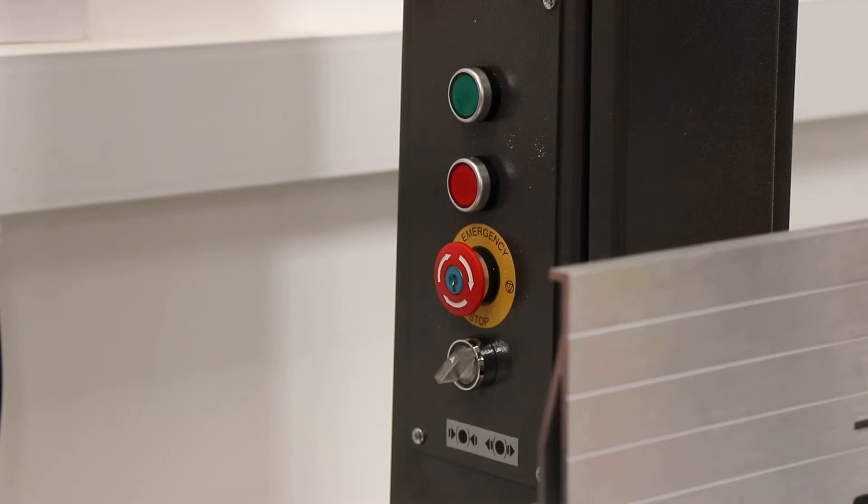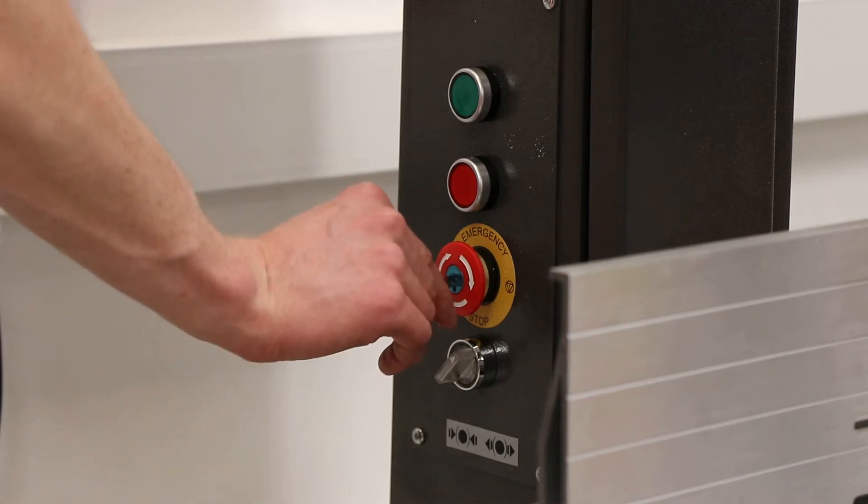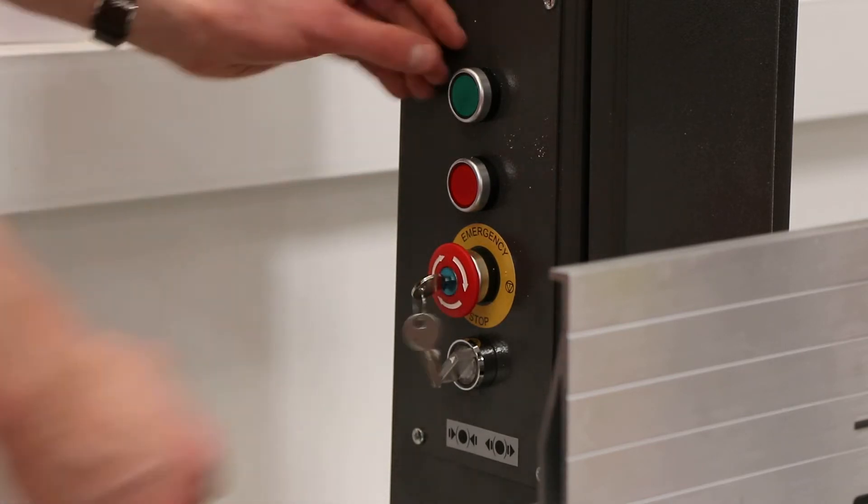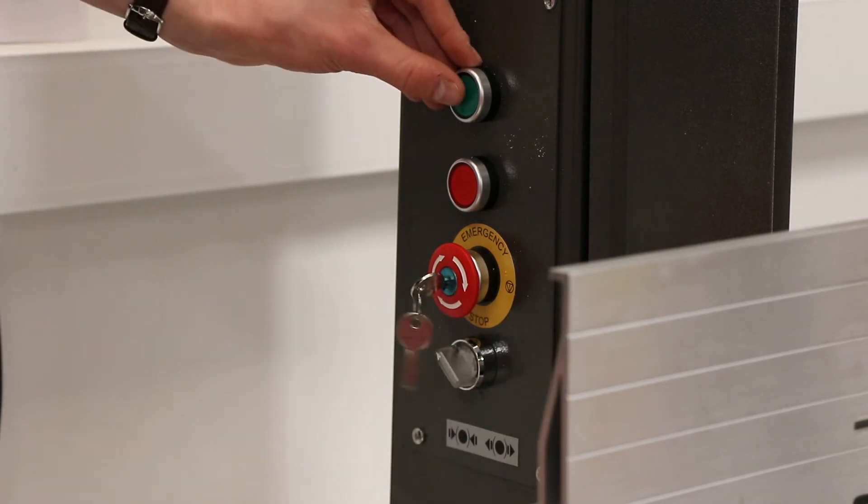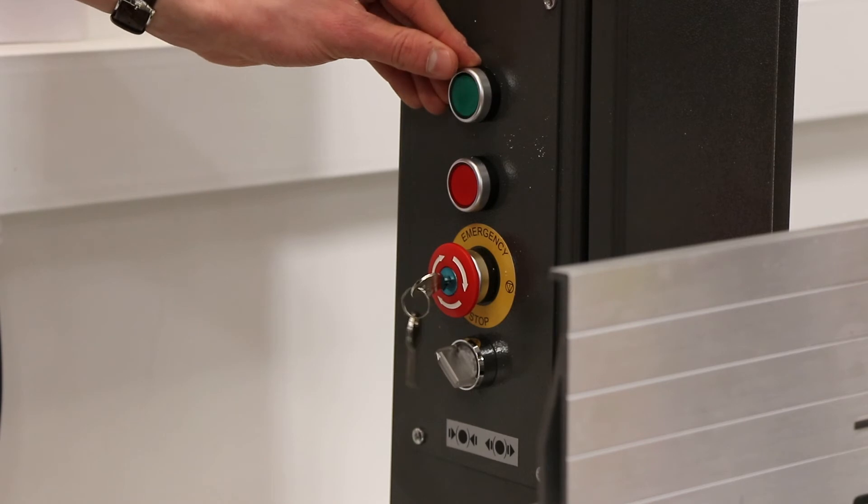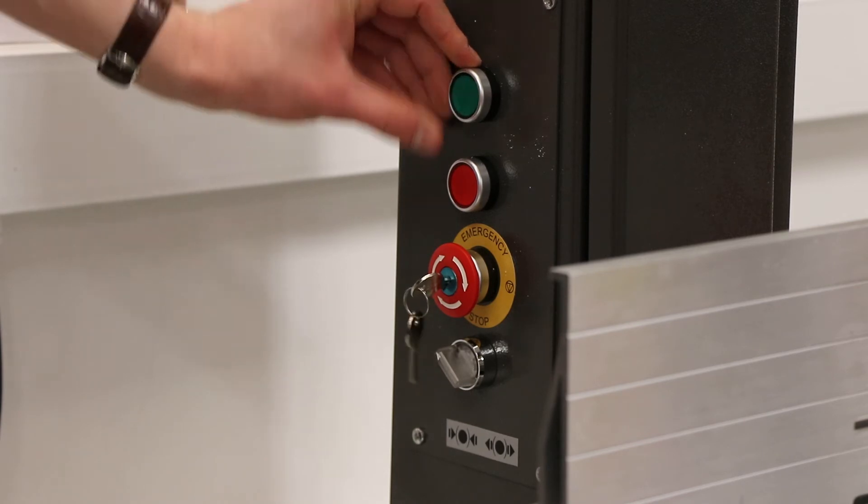When you're ready to use the bandsaw you need to insert the key into the e-stop and turn. Then engage the electromagnetic brake using the grey switch. You can now turn on the machine using the green button. Use the red button to turn the machine off.